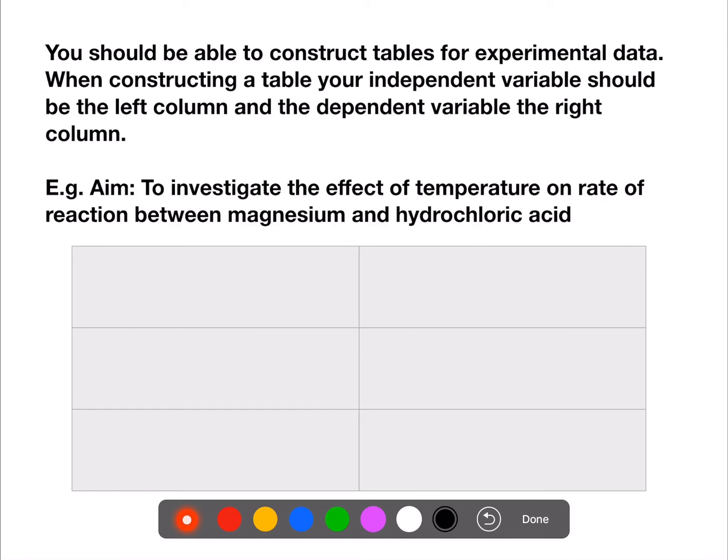You should also be able to construct tables for experimental data. When constructing a table of experimental data, your independent variable, or the one which you controlled, should be in the left hand column.